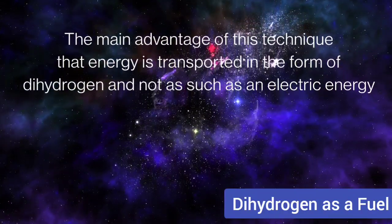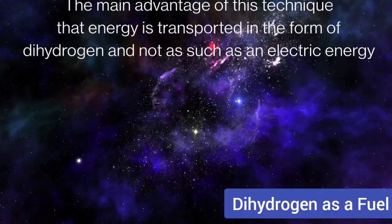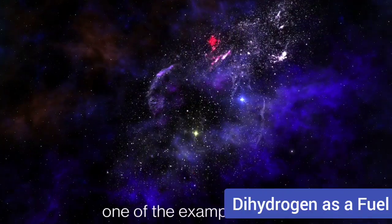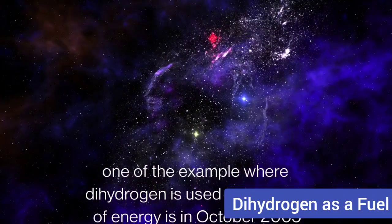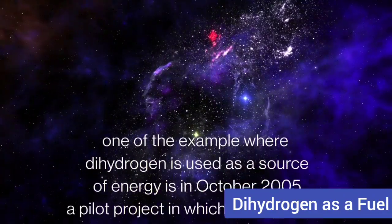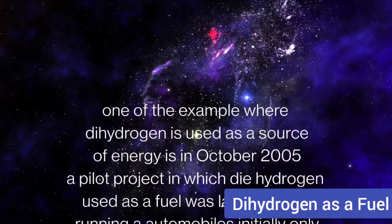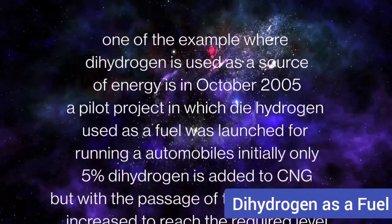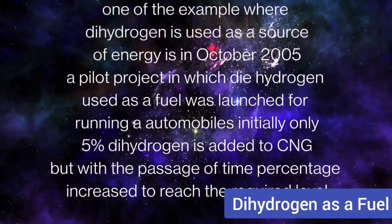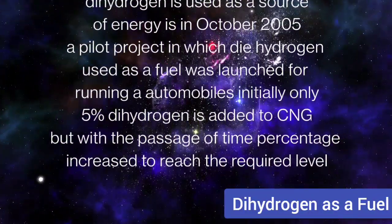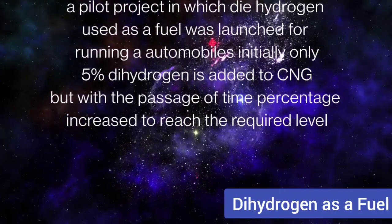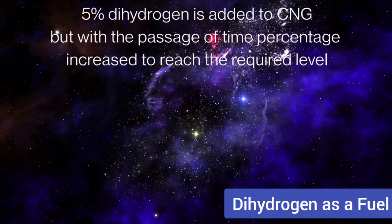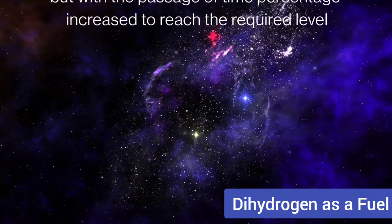The main advantage of hydrogen economy is that energy is transported in the form of dihydrogen and not as electrical energy. One example is from October 2005, when a pilot project using dihydrogen as a fuel was launched for running automobiles. Initially, only five percent dihydrogen was added to CNG, but with the passage of time the percentage increased to reach a required level. This was the first use of dihydrogen as a source of energy in CNG.